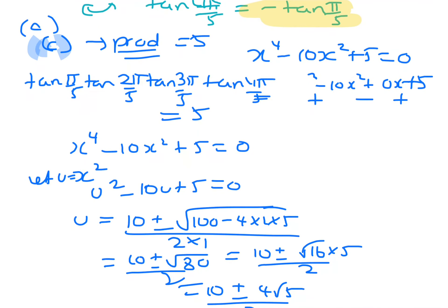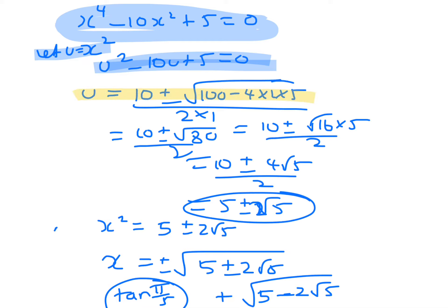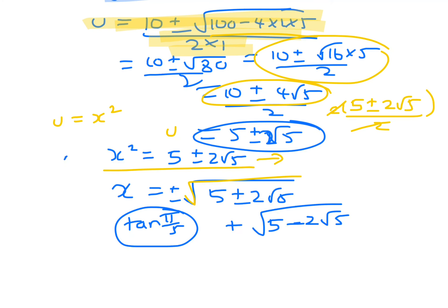Another way to find the roots is to let u = x² and form a quadratic: u² - 10u + 5 = 0. Using the quadratic formula: u = (10 ± √(100 - 20)) / 2 = (10 ± √80) / 2 = (10 ± 4√5) / 2 = 5 ± 2√5. So x² = 5 ± 2√5, and taking square roots gives x = ±√(5 ± 2√5). Since tan(π/5) is the smallest root and is positive, it corresponds to √(5 - 2√5).